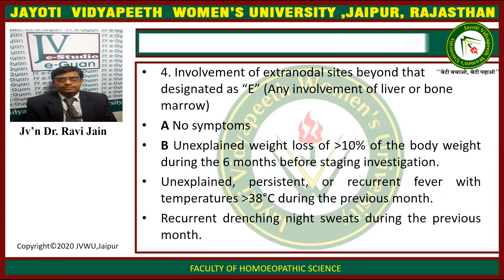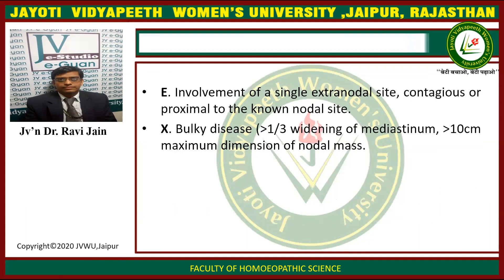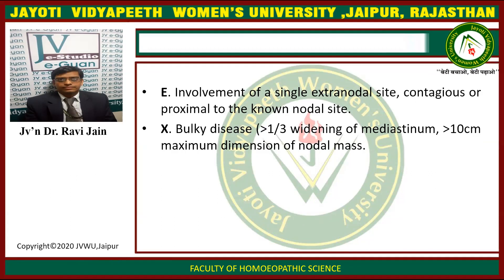Symptom designations: A means no symptoms; B means unexplained weight loss of greater than 10% of body weight during the past 6 months before staging, unexplained persistent or recurrent fever with temperatures greater than 38°C during the previous month, or recurrent drenching night sweats during the previous month. E designates involvement of a single extranodal site contiguous or proximal to a known nodal site. X denotes bulky disease greater than one-third the width of the mediastinum or greater than 10 cm maximum dimension of a nodal mass.